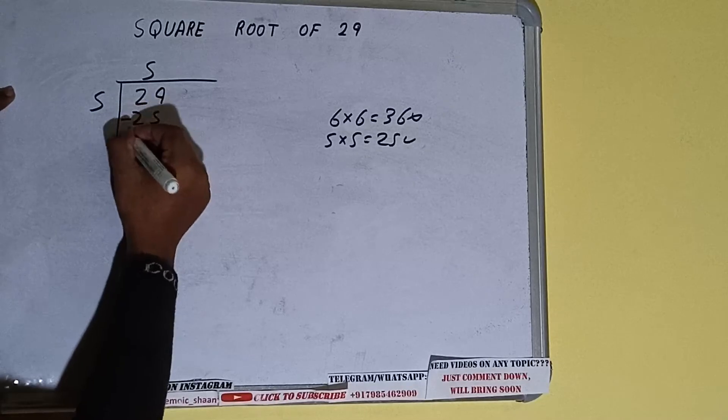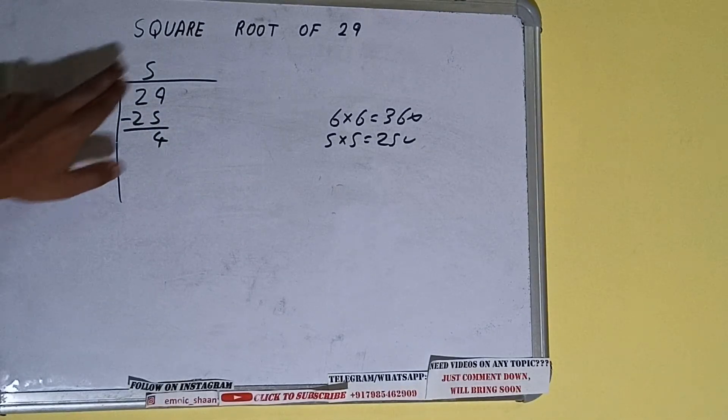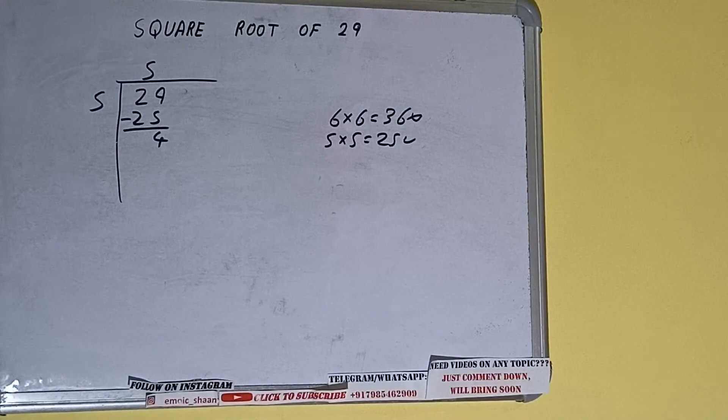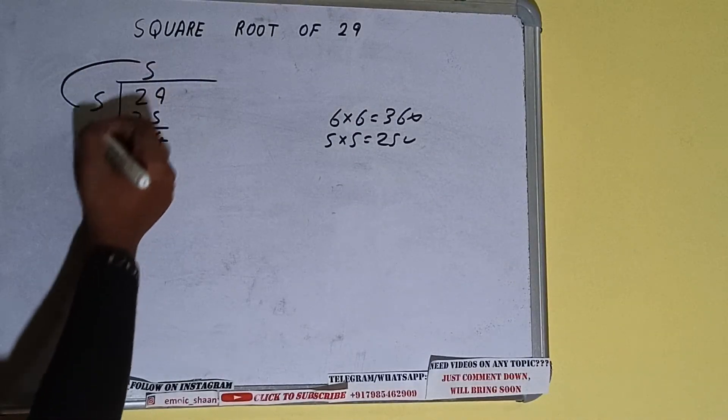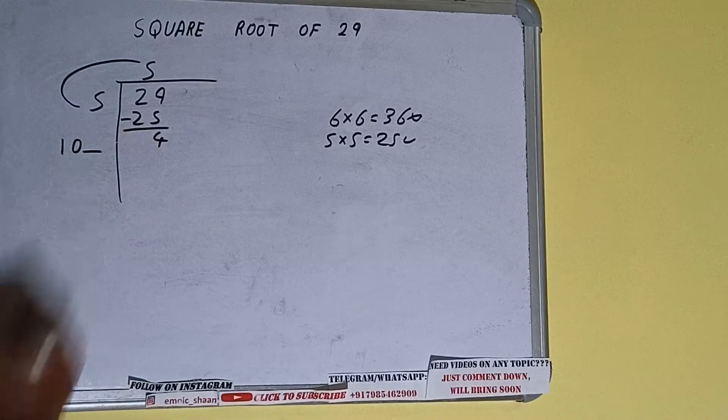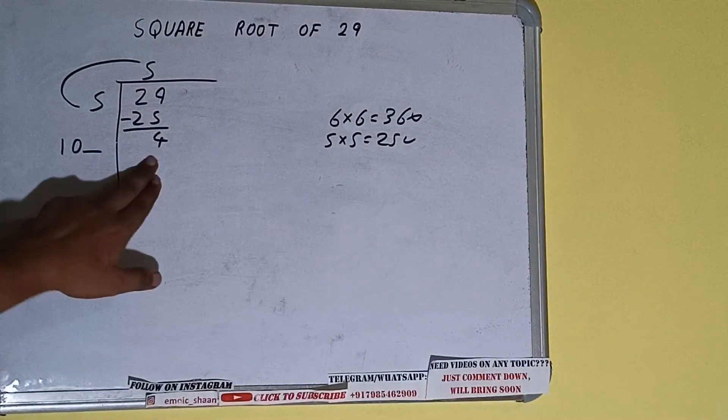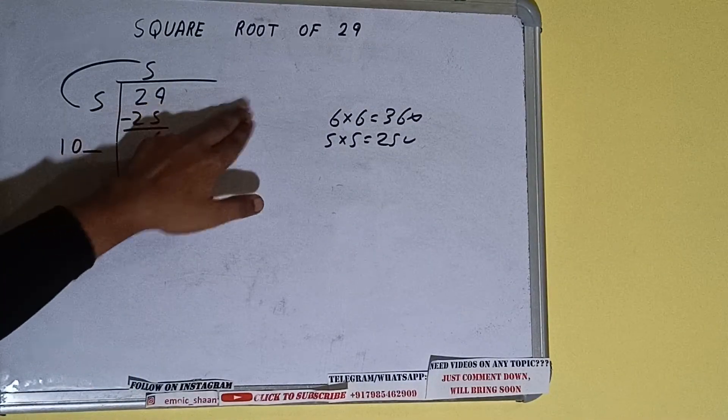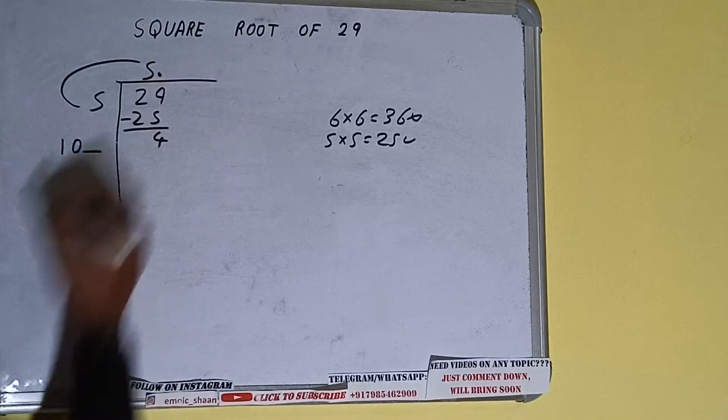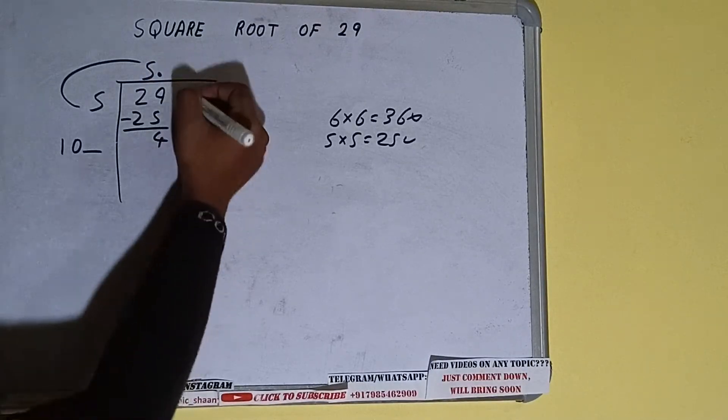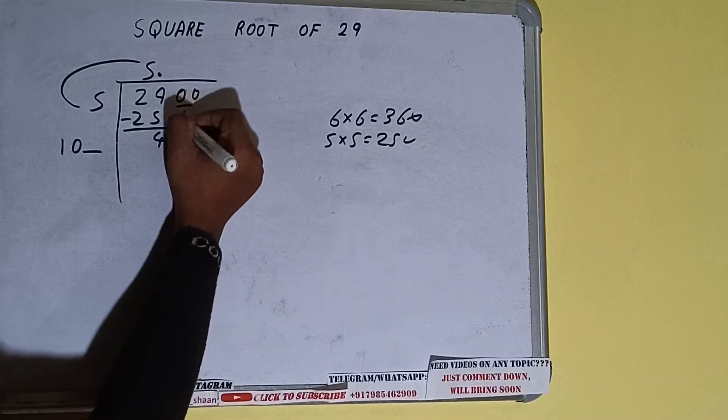Subtract, 4 will be left. Now we did 5 into 5 so add both, so 5 plus 5 will be 10. Write it here and keep a digit extra. And this number we need to make it big but we don't have more pairs so we'll put decimal. Once we put decimal we can bring pair of zeros down and